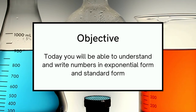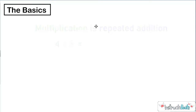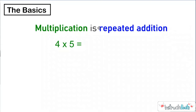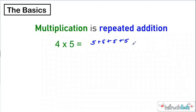So let's dive right in with some of the basics we're going to need today. You've learned this a long time ago, but multiplication is repeated addition. So when we look at four times five, really what we're thinking about is four groups of five. So this would be five plus five plus five plus five. Technically, this multiplication equation is equal to this repeated addition equation.